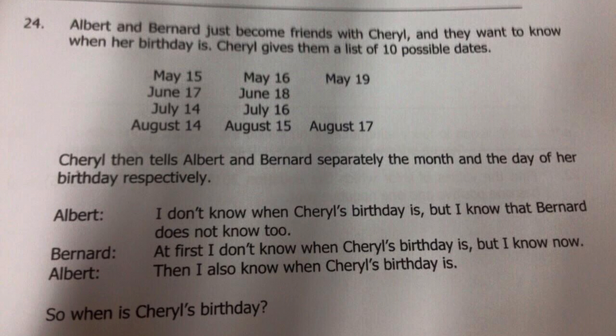The weirdness starts here. Albert says: 'I don't know when Cheryl's birthday is, but I know that Bernard does not know too.' Then Bernard says: 'At first I don't know when Cheryl's birthday is, but I know now.' And Albert then says: 'Then I also know when Cheryl's birthday is.' Assuming that happened within five seconds, they are really smart kids. So the real question is: when is Cheryl's birthday?